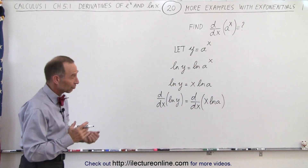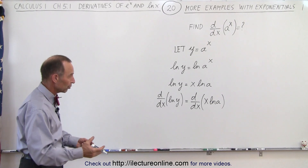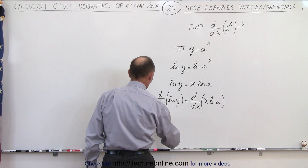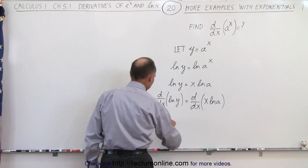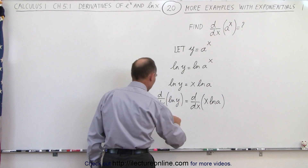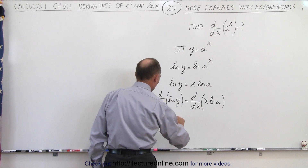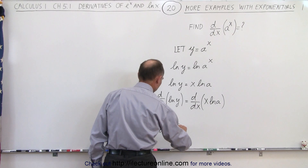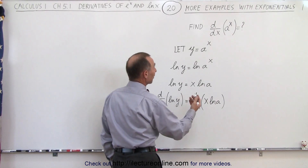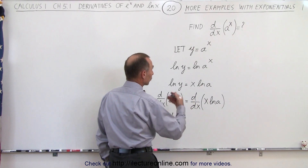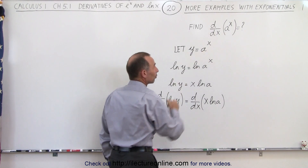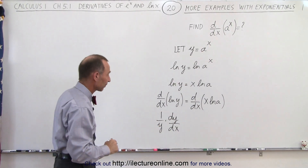Now on the left side we have the natural log, so we use the natural log rules. We take 1 over y, and then we multiply that times the derivative of y with respect to x, so we write dy/dx. And that is what we're trying to find — we're trying to find the derivative of y with respect to x, which is the same as the derivative of a to the x.